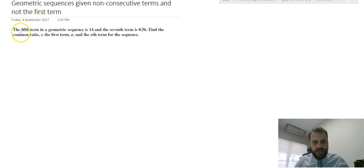So they're saying the fifth term in a geometric sequence is 14, so t5 equals 14, and the seventh term, t7, equals 0.56. Find the common ratio r, the first term a, and the nth term for the sequence.